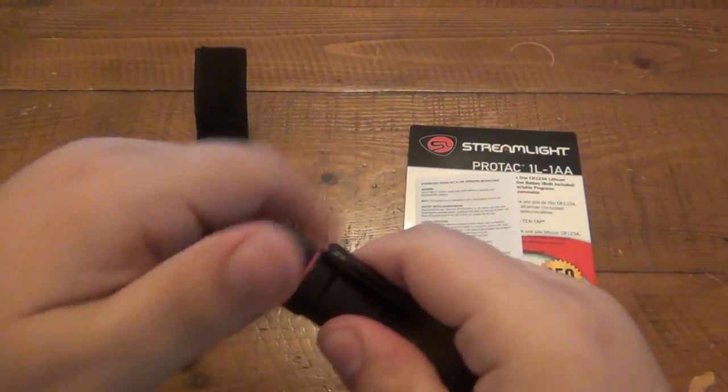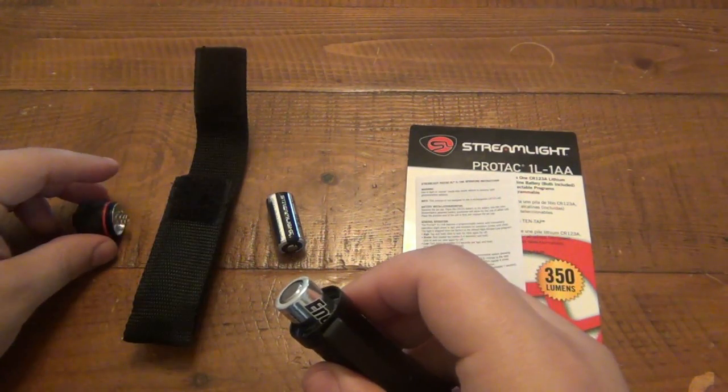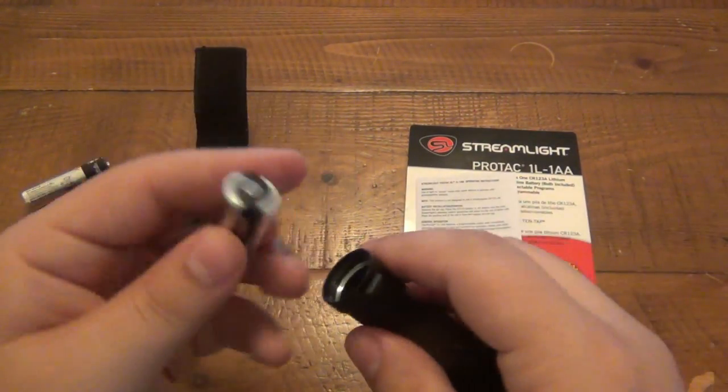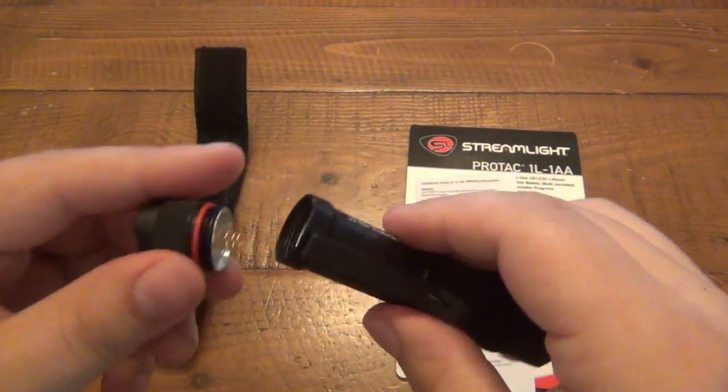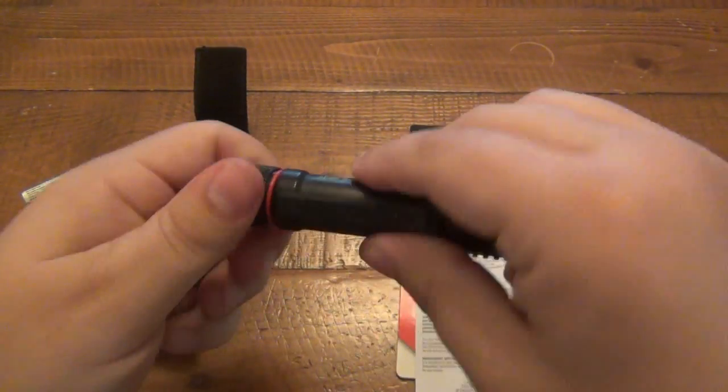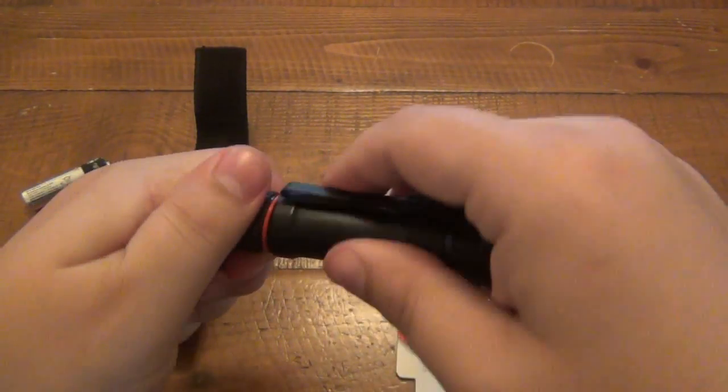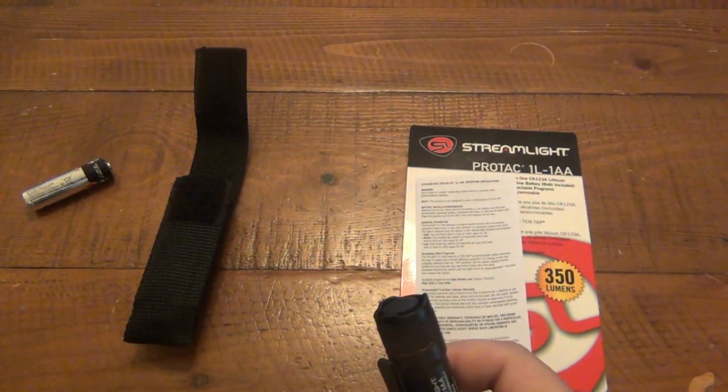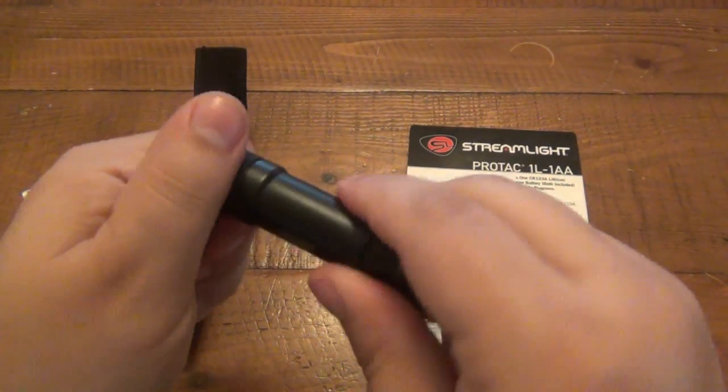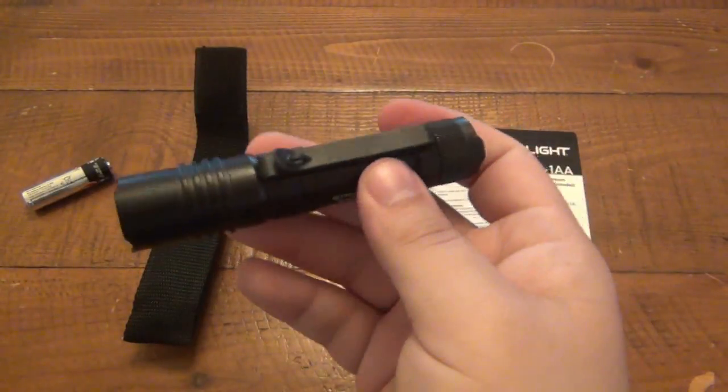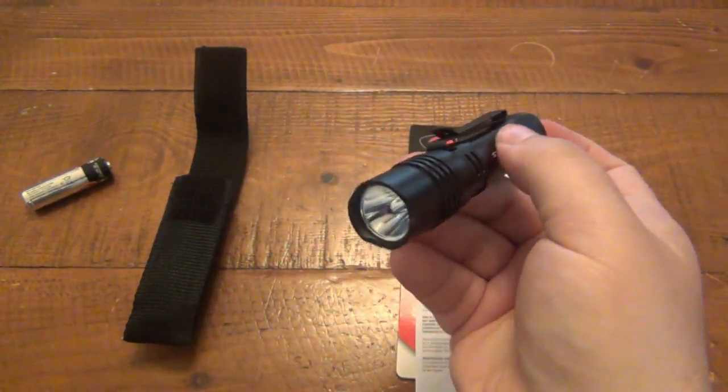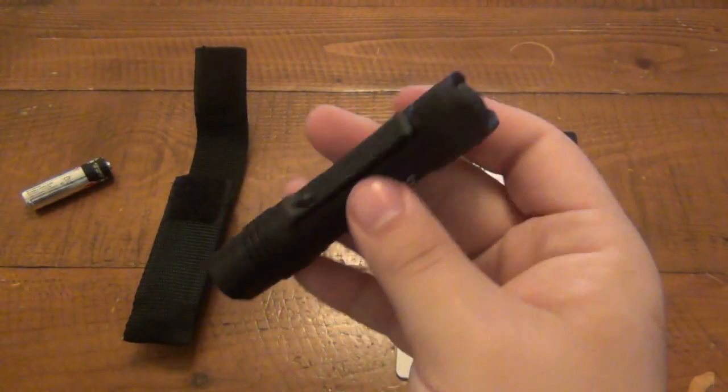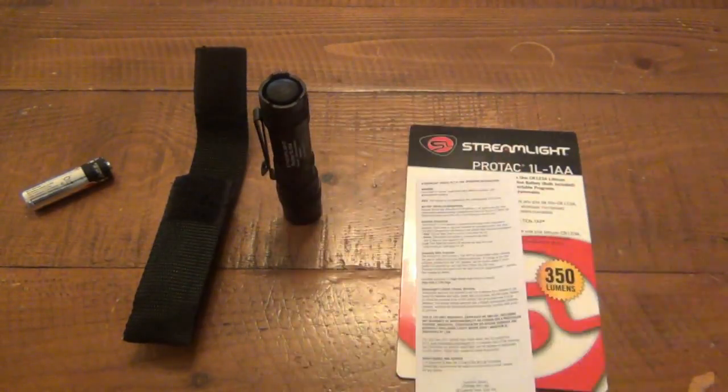Now, obviously a AA doesn't have the same energy as a CR123, so your output and run times are going to be different. I thought that was a really cool design. I've seen different flashlights that can change between battery sources, but sometimes they have different bodies that get lost in your gear drawers. I like that this is very simple. It's a simple concept. I love the idea. The CR123 puts out a little bit more light, but that was the appeal to me.